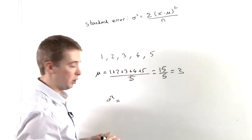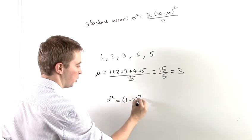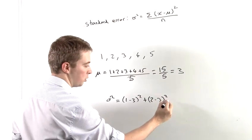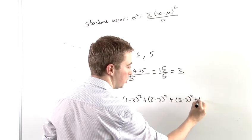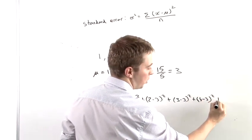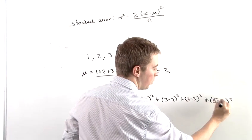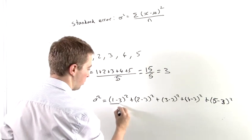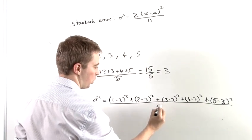...of 1 minus 3 squared, plus 2 minus 3 squared, plus 3 minus 3 squared, plus 4 minus 3 squared, plus 5 minus 3 squared. And we're going to divide all of that by the number of points we have, which is 5.